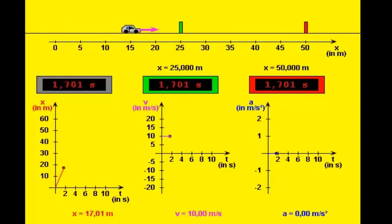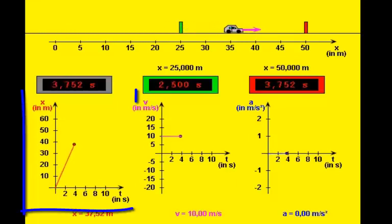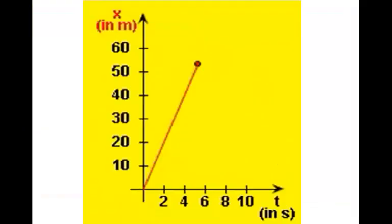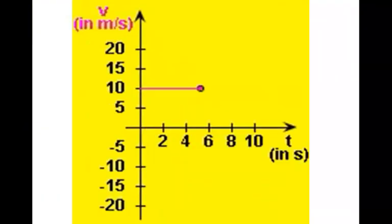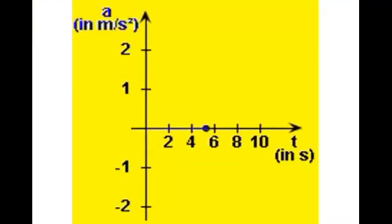Here we have a car moving at uniform velocity. Here's an xt position time graph, a vt velocity time graph, and an at acceleration time graph.